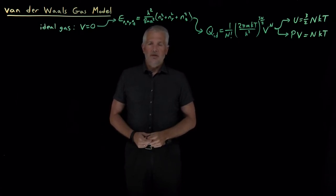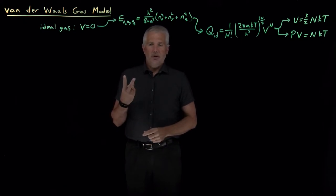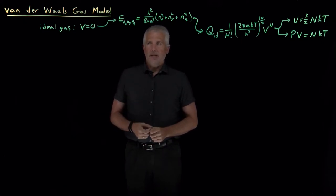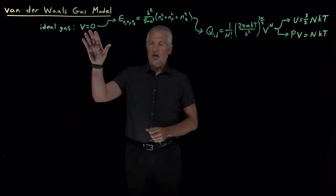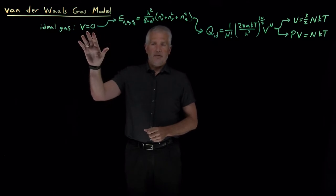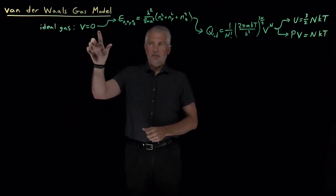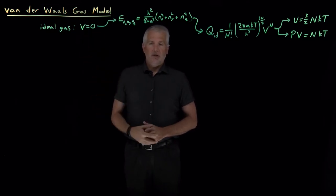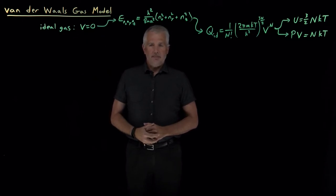Real gases are not ideal — they don't behave ideally. In particular, they don't obey the two different assumptions we've made about ideal gases: that they have no intermolecular interactions (that potential energy is zero), and also that they have no molecular volume, that they don't take up any space.